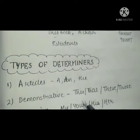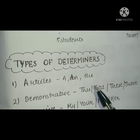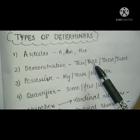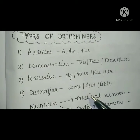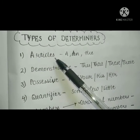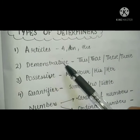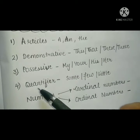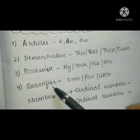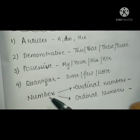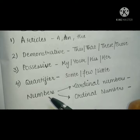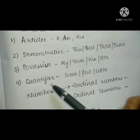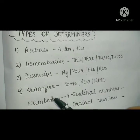Next, we have the types of determiners. In the types of determiners, we have four types. The first one is articles, the second one is demonstrative, the third one is possessive, and the fourth is quantifier. And there is a fifth one — we have numbers — but we count it after quantifier.